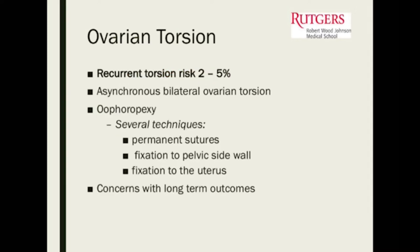Recurrent torsion risk is 2 to 5%. There are some studies — though we don't really know how beneficial it is — about pexying the ovary to the sidewall for patients having recurrent ovarian torsions. But the pexy may fail and she may still be at risk for torsion, so we don't really have great long-term studies for that.